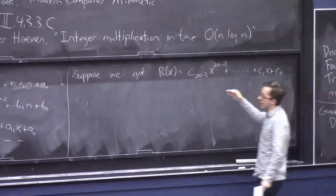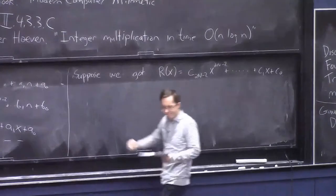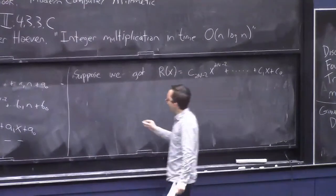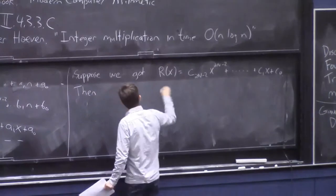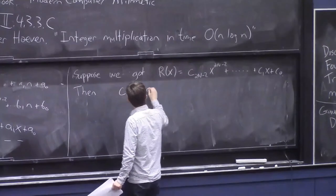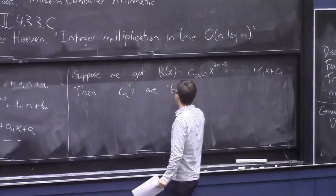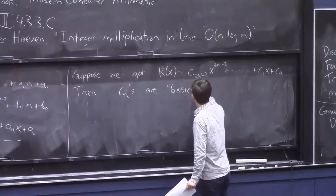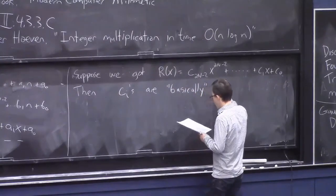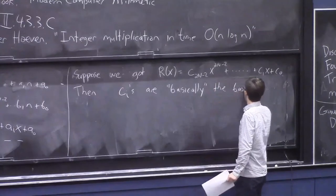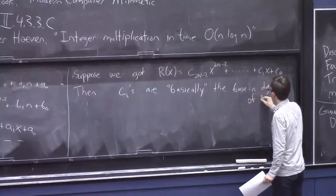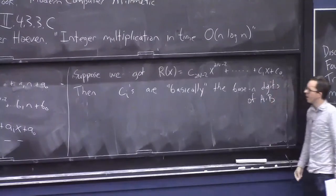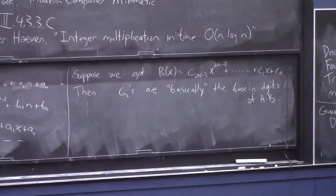which I'll write as C_2n minus 2 x to the 2n minus 2 plus dot dot plus C_1 x plus C_0. Somehow, suppose we did this polynomial multiplication. Then these coefficients, C_i's, are basically the digits, the base n digits of the thing that we're trying to figure out, A times B, this number.